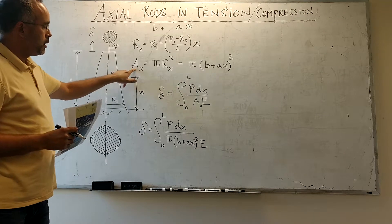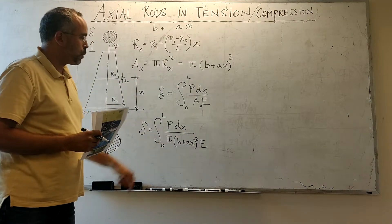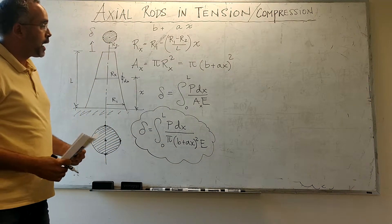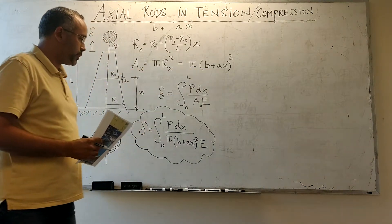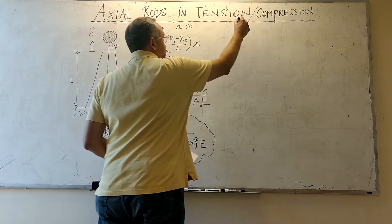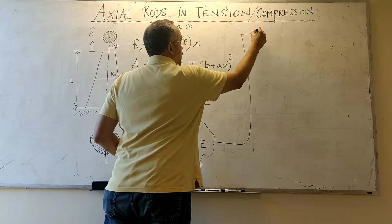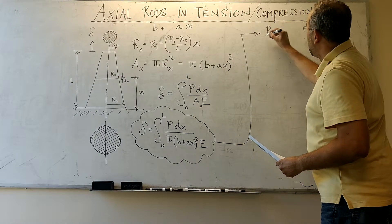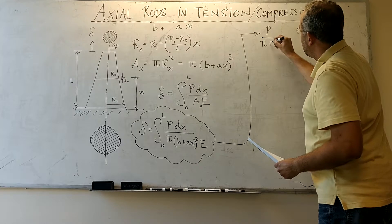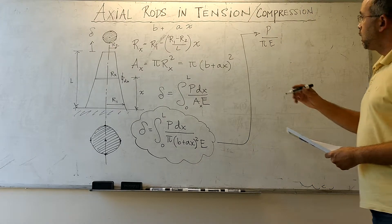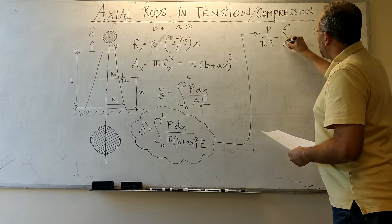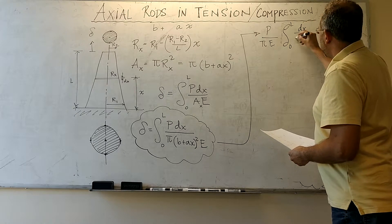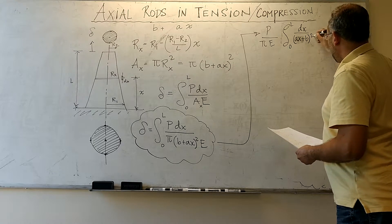Here A is a function of X, equal to π times (b plus ax) squared. So the key is to solve this integral. The integral has an exact solution: P over πE comes out of the integral because they are constant, and we are left with the integral from 0 to L of dx divided by (ax plus b) squared.